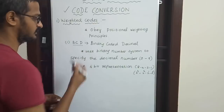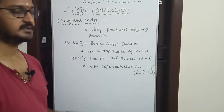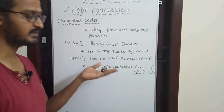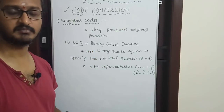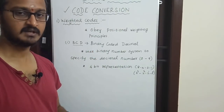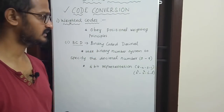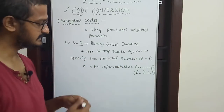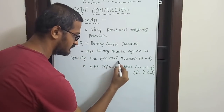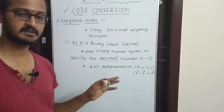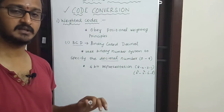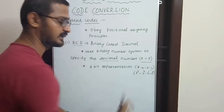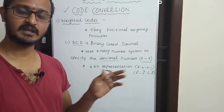BCD stands for Binary Coded Decimal. It uses the binary number system — 0s and 1s — to specify decimal numbers. When we use digits 0 to 9, we are working in decimal, which has 10 values.